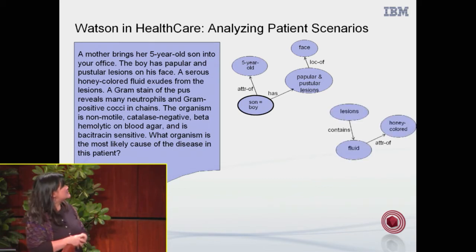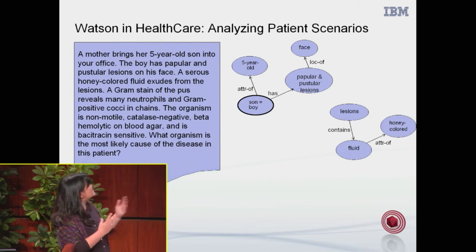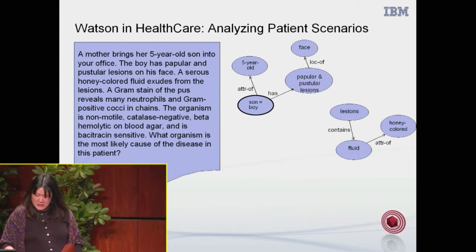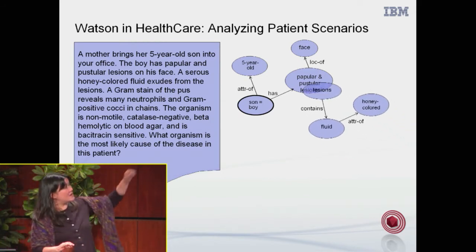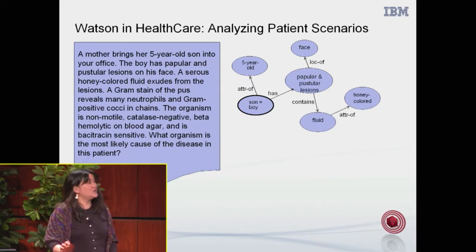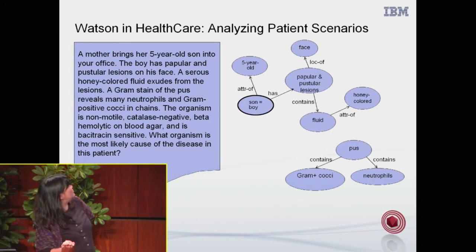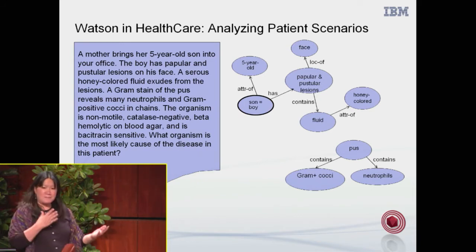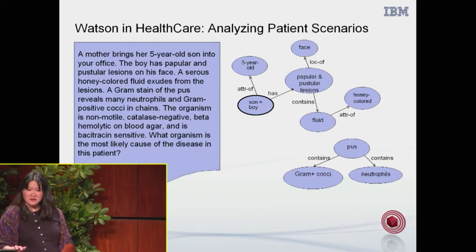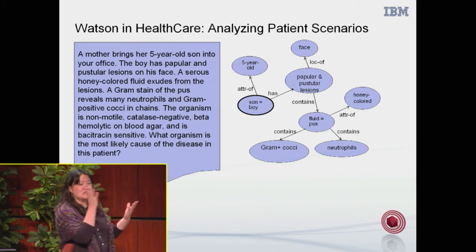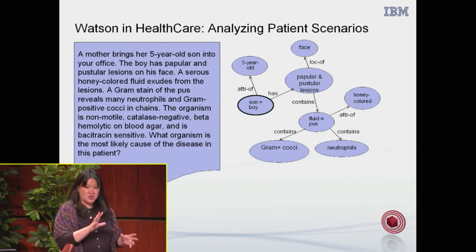We keep going and say, okay, now there is a serous honey-colored fluid that extrudes from the lesions. So now we have fluid — lesions that have fluid. But those lesions are actually the same lesions we already talked about. Then we say, okay, now we have a gram stain of the pus that reveals these things, and the pus and the fluid are the same thing. They all use different words but are actually talking about the same things. You really need to link them to get the whole picture, otherwise you have all these things you think are different but aren't.